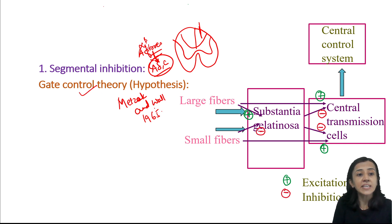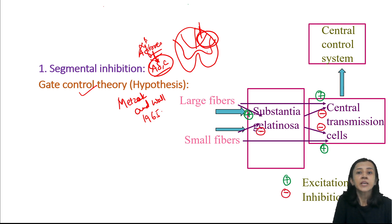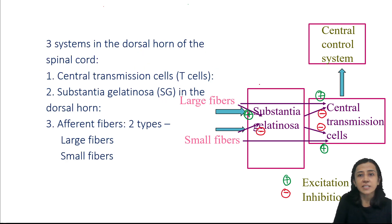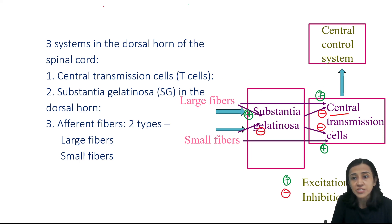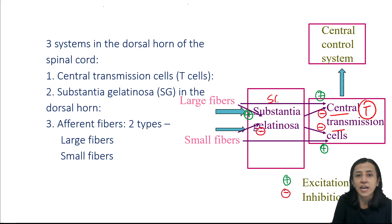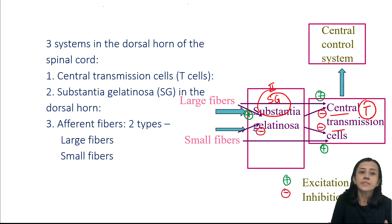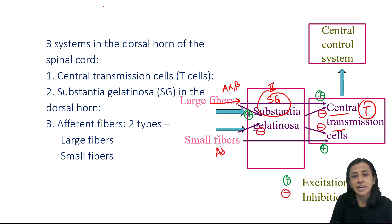The gate control theory suggests that a pain inhibitory complex is present in the spinal cord, mainly in the dorsal horn. In this theory, there are three systems in the dorsal horn: first, central transmission cells called T cells; second, substantia gelatinosa (SG) cells present in the dorsal horn at Rex lamina number two; and third, afferent fibers — either large fibers (A-alpha, A-beta) or small fibers (A-delta and C fibers).